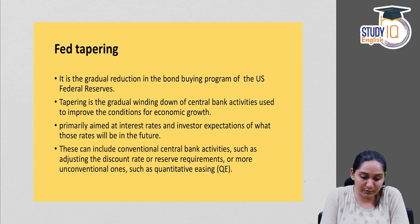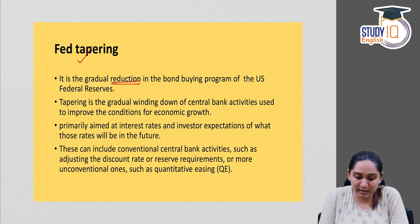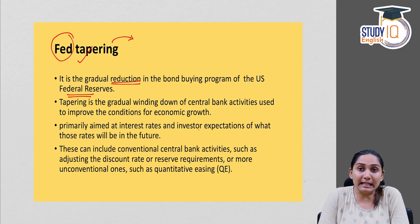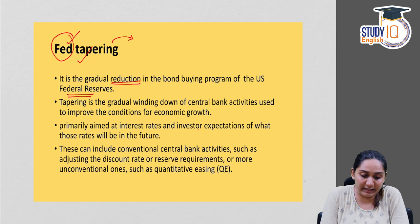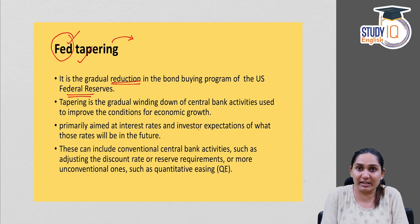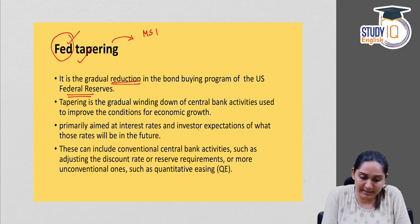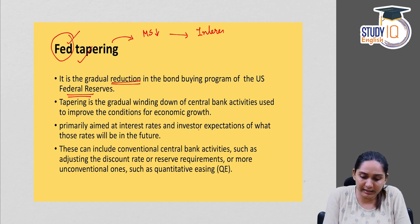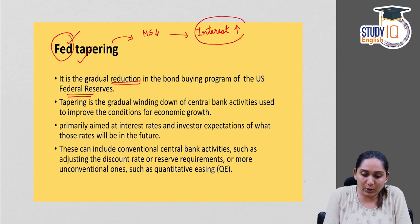Fed tapering is a gradual reduction in the bond buying program of the U.S. Federal Reserve. 'Fed' stands for Federal Reserve, which is the central bank of the U.S. economy — similar to how India has the RBI. Fed tapering means reducing or restricting money supply. The U.S. central bank decides to increase interest rates, which is a contractionary monetary policy.